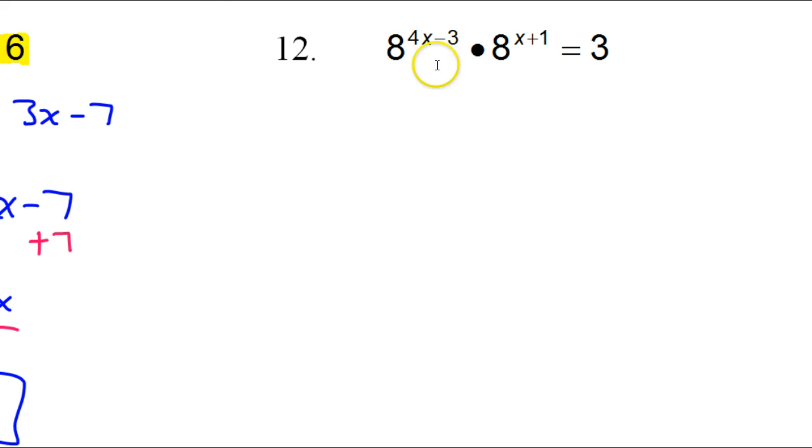So I'm mentioning that now because that's what we're dealing with. We have the same base, and we have these powers. So what we are going to do is we're going to keep that base of 8, but we're adding these. We're doing 4x minus 3, and we're doing plus x plus 1. We're adding the exponents. And really, that just means we're combining like terms. So 4x plus x is 5x. Negative 3 and positive 1 is negative 2.